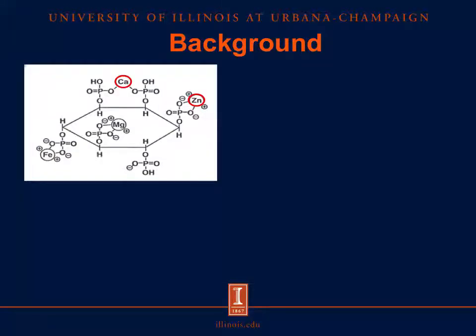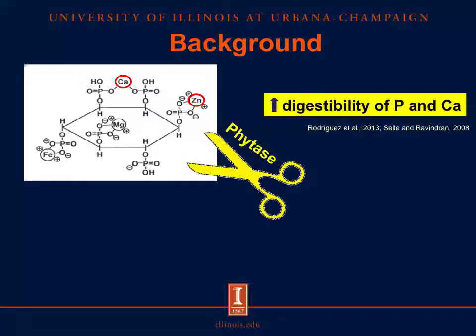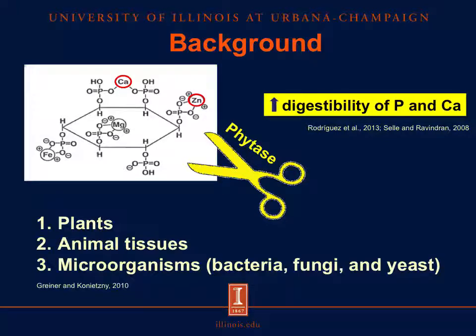To reduce these problems, we can add phytase in the diets. Phytase hydrolyzes the phosphomonoester bond of phytate and releases the phosphorus and also other minerals like calcium. Therefore, phytase increases the digestibility of phosphorus and calcium. Phytase are found in plants, animal tissues, and microorganisms like bacteria, fungi, and yeast.